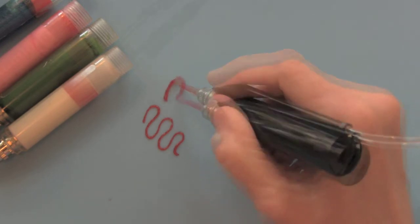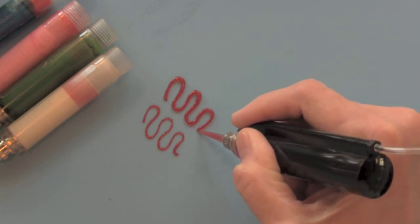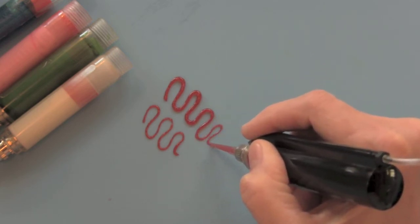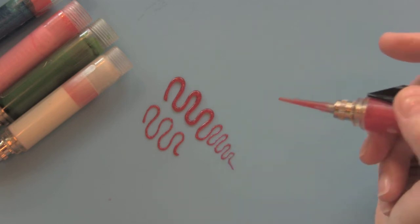If you want a thicker line, you can put more pressure with your fingertip over that hole, and less pressure will give you a thinner line. You can also change the tip, as there are 14 different tips that come with the pen.